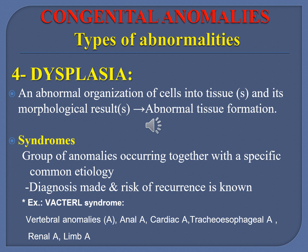Syndromes are groups of anomalies occurring together with a specific common etiology. The diagnosis can be made with known risk of occurrence for a known syndrome. For example, VACTERL syndrome, where each letter stands for a particular anomaly: Vertebral anomaly, Anal, Cardiac, Tracheoesophageal, Renal, and Limb defects — all together giving rise to a syndrome.